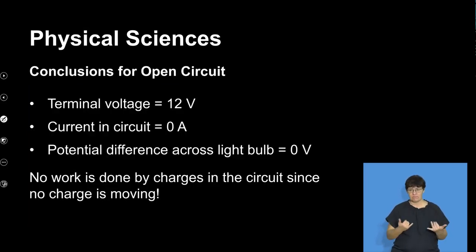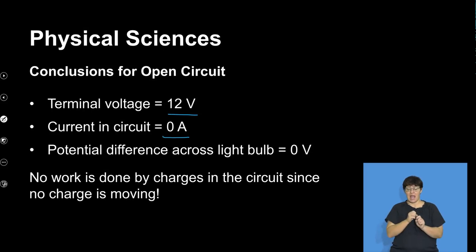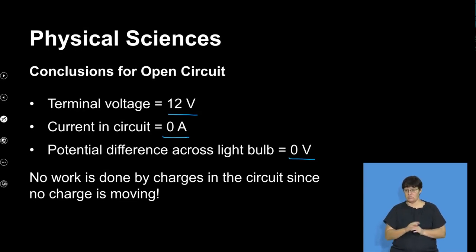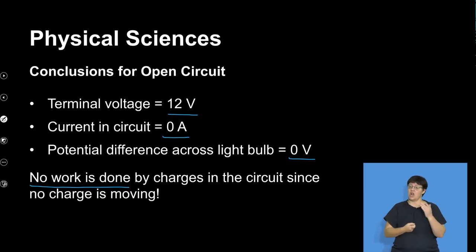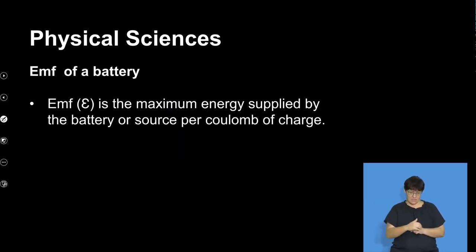In conclusion, for an open circuit, the terminal voltage across the battery is 12 volts. There is no current flowing, which means there's no work done in the circuit — that's why we register zero amperes of current from the ammeter. The potential difference across the light bulb is zero volts, meaning there is no work done by charges in the circuit since there is no charge moving. No charge moving means current in the circuit equals zero amperes.